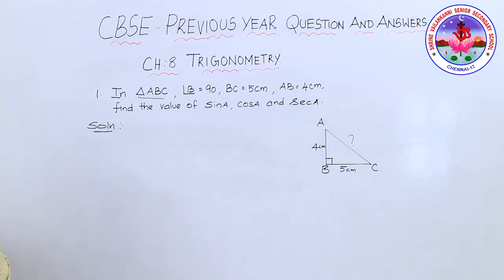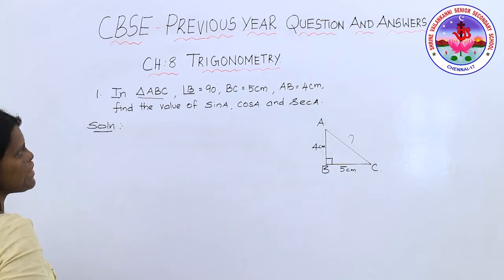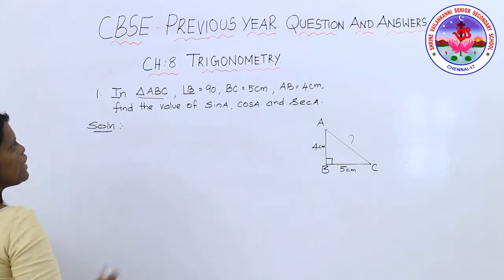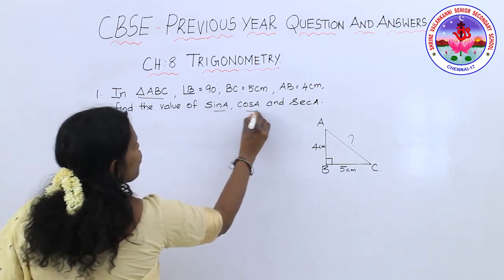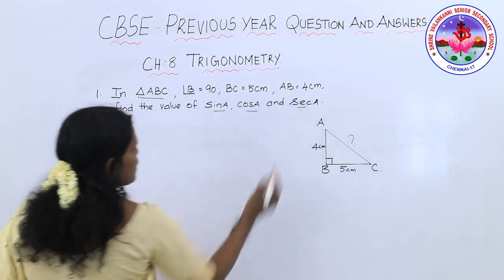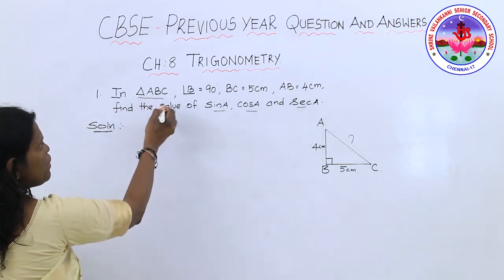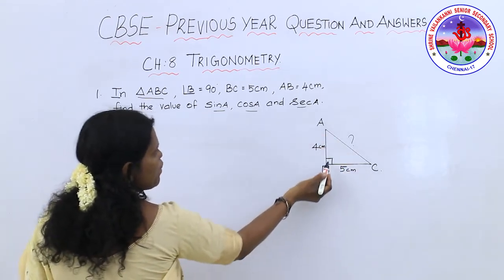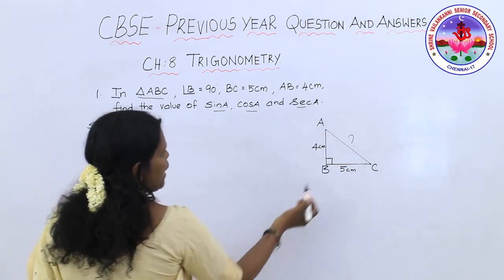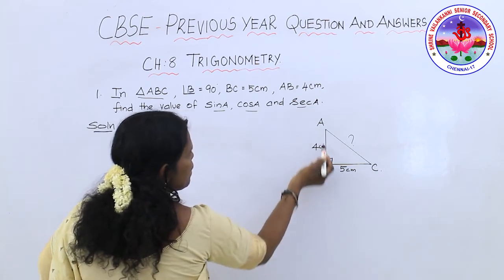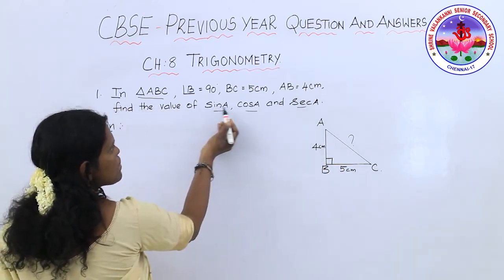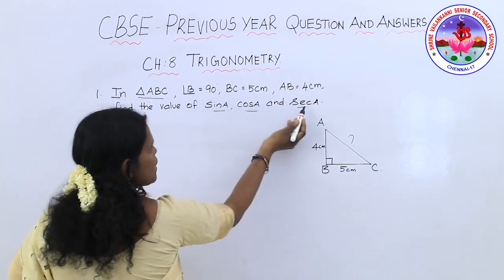The first problem: in triangle ABC, angle B is 90 degrees, BC is 5 centimetres, AB is given as 4 centimetres. We need to find the value of sin A, cos A, and secant A. So let me draw the right angle triangle ABC with B equal to 90, BC equal to 5 centimetres, and AB equal to 4 centimetres.